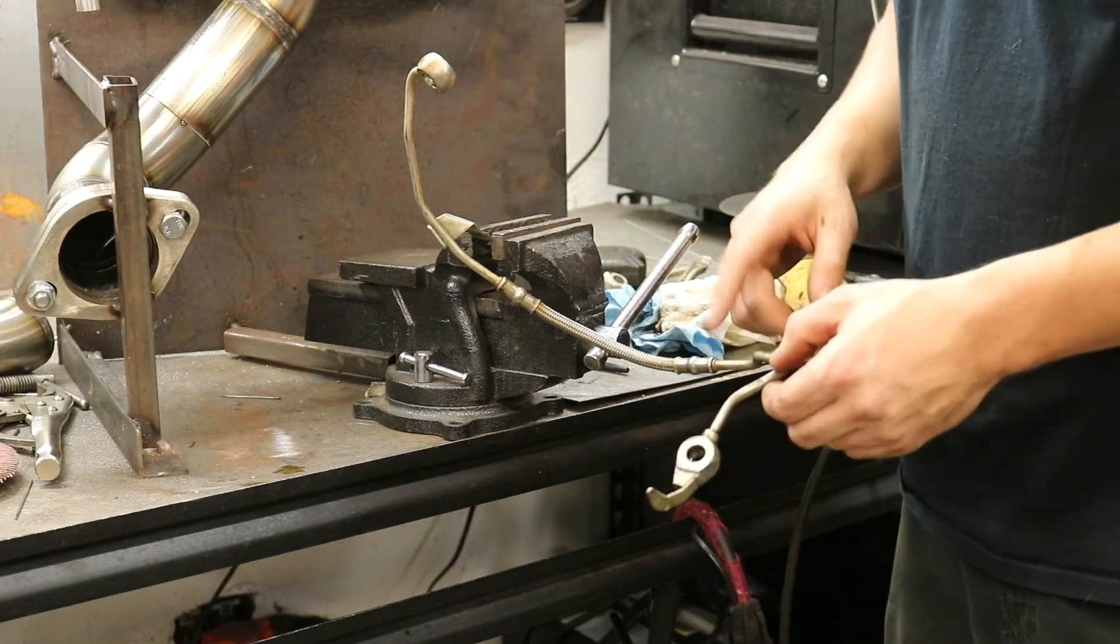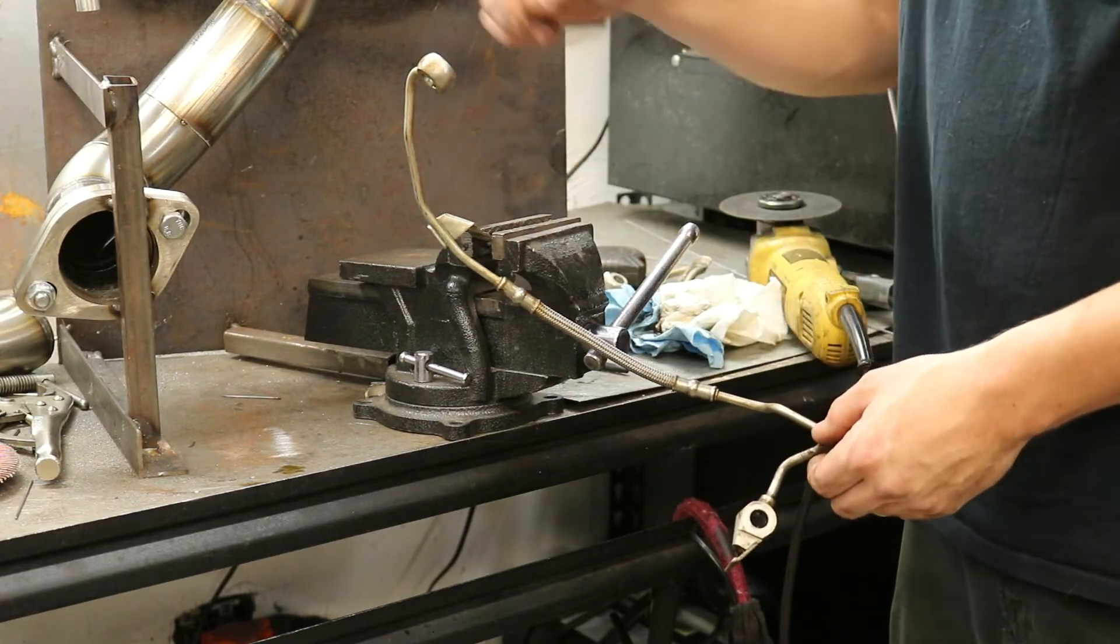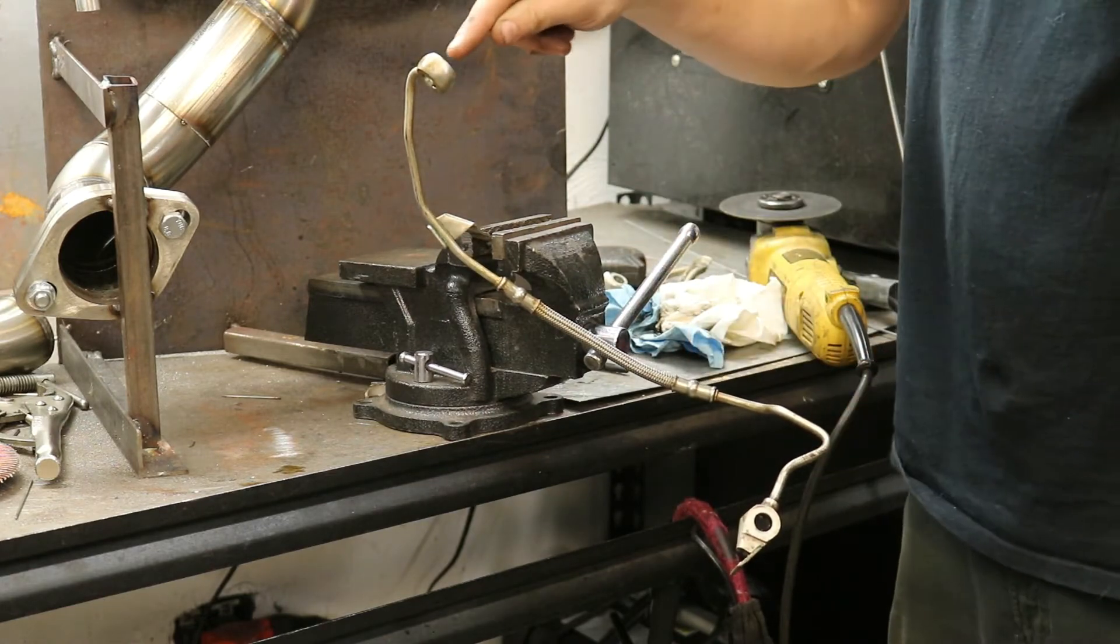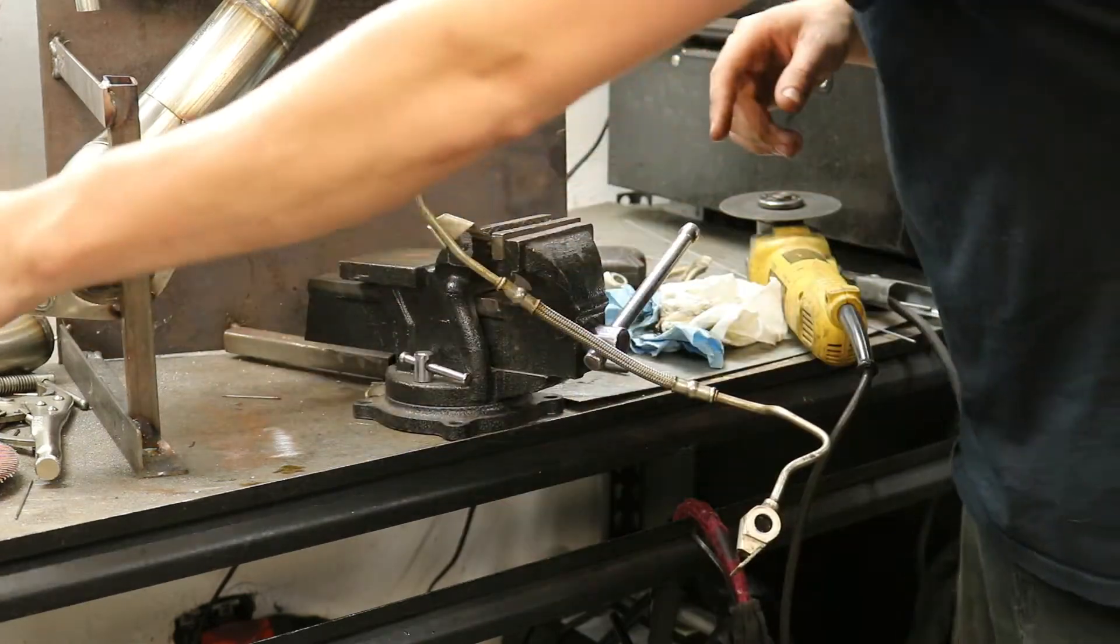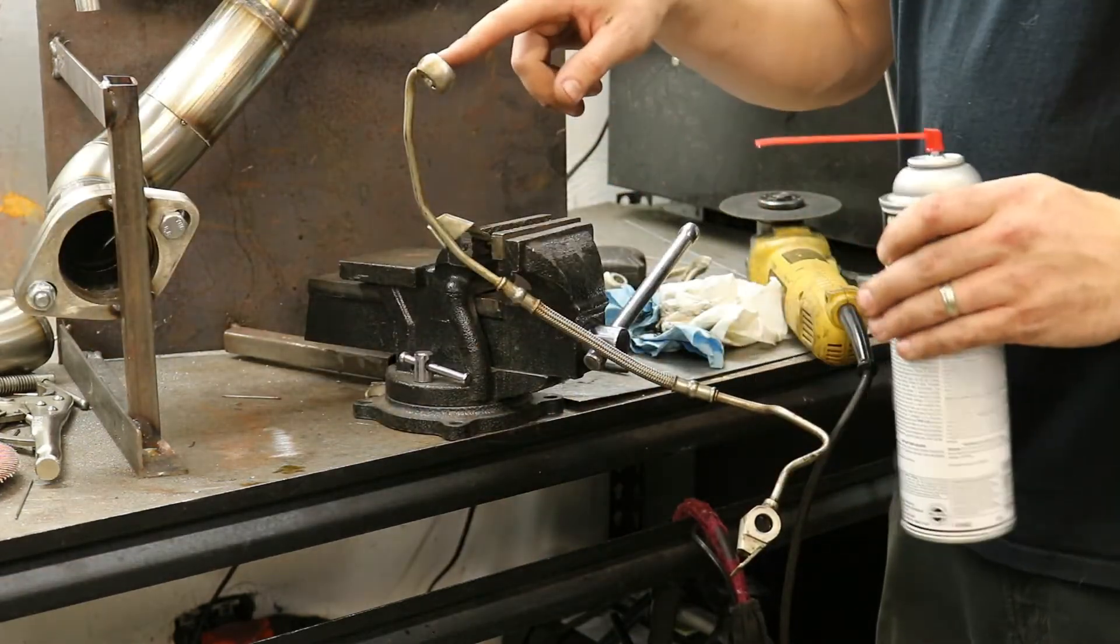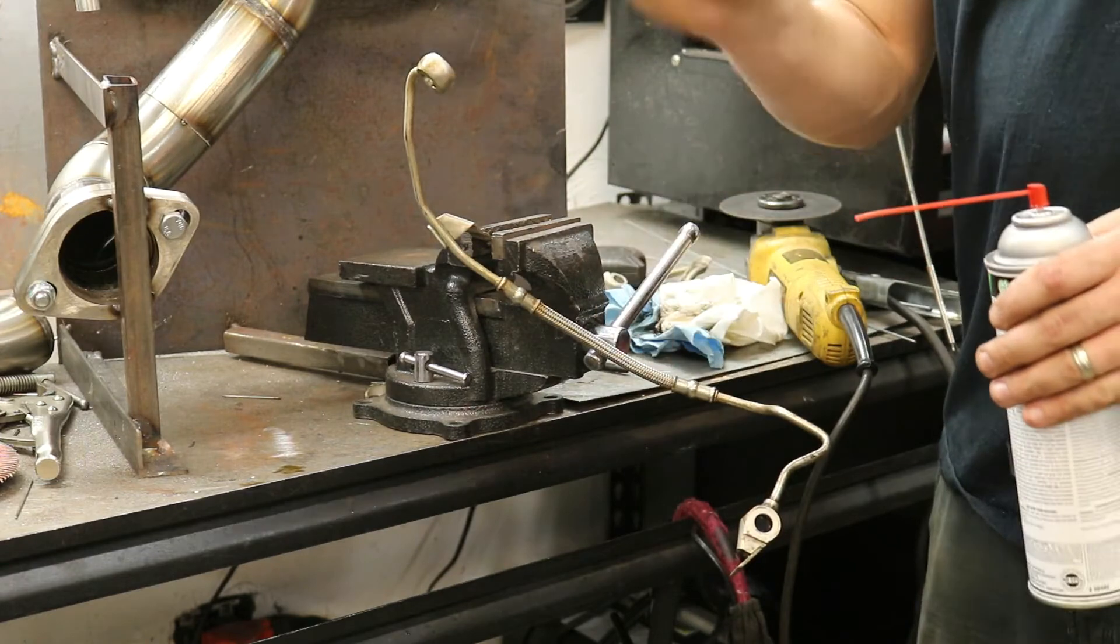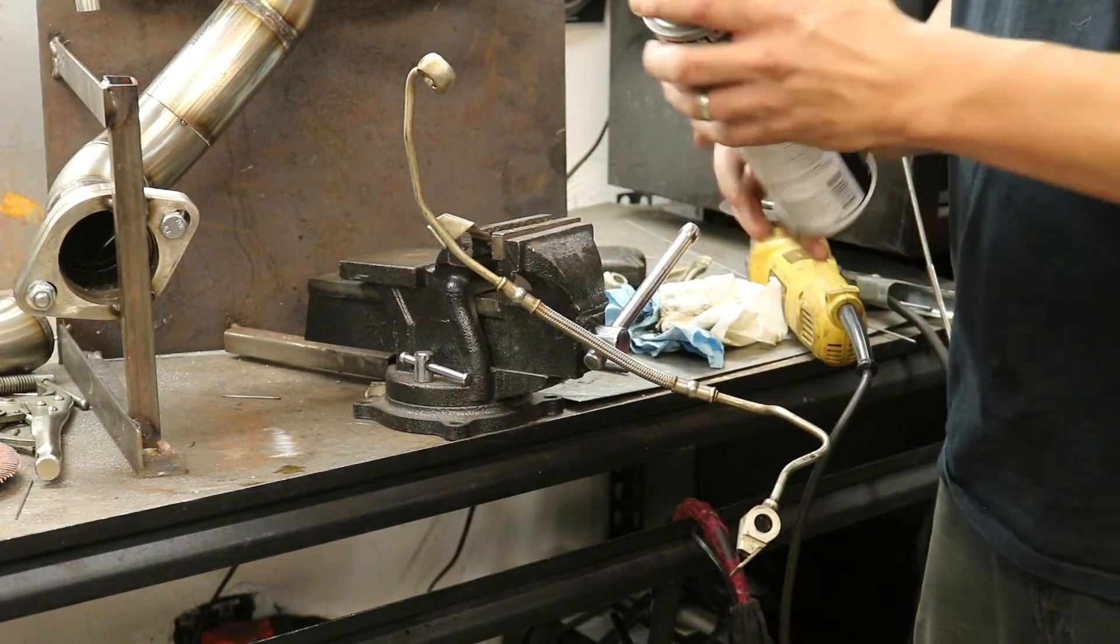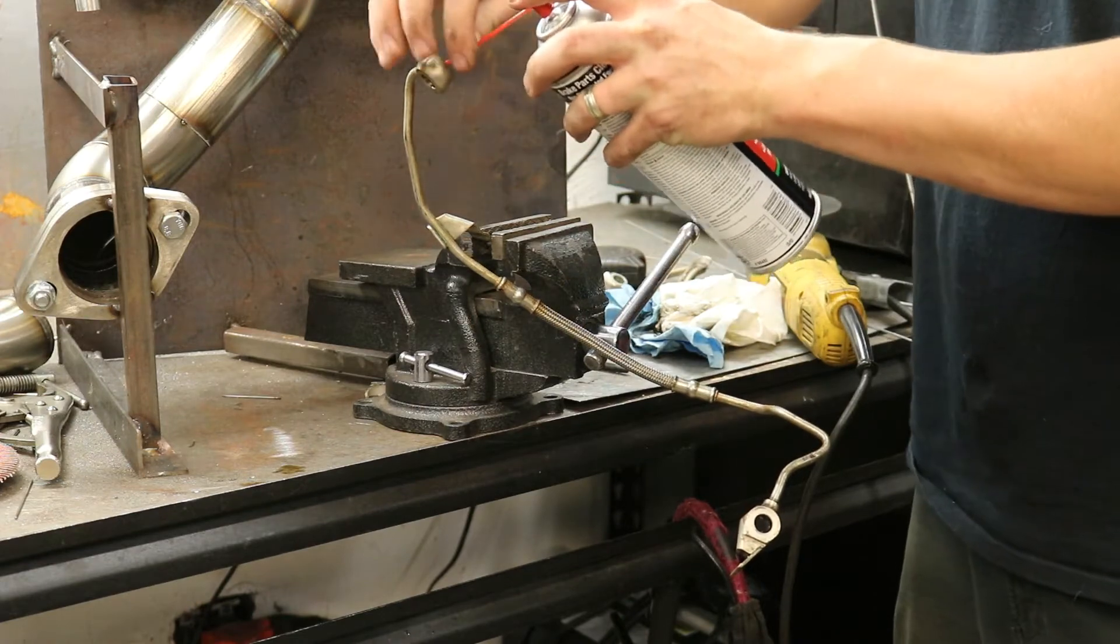So I'm going to show you guys that this line is clogged up. So this usually goes in the head and this usually goes in the turbo. So what I'm going to do is actually spray some brake cleaner through this hole. And you're going to see that nothing, maybe even just a tiny little seep, comes out of this hole. And that is going to show you that this line is clogged.